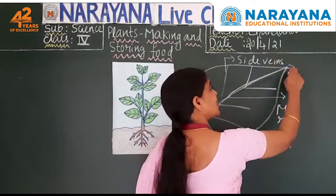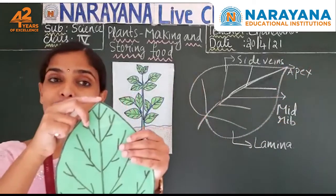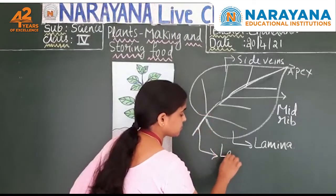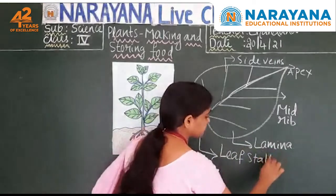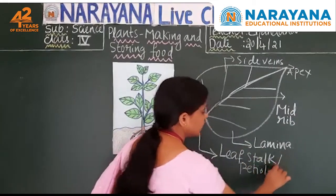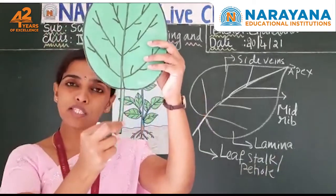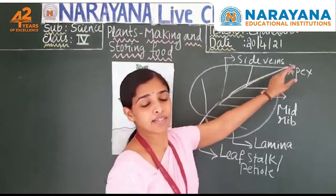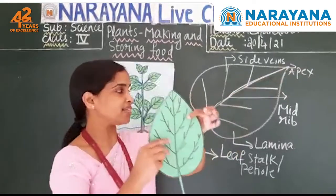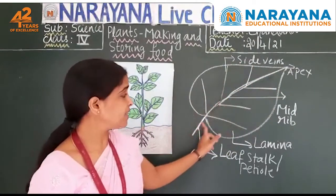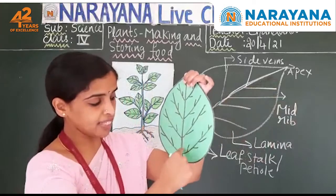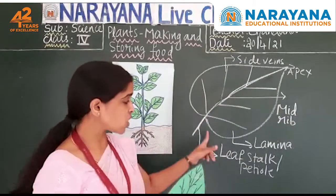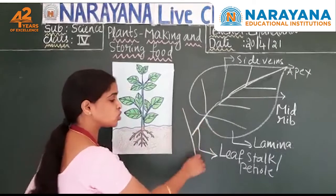The tip of the leaf is called the apex. And the stalk portion of the leaf is called the petiole, or leaf stalk. So: the tip of the leaf is the apex; the flat green portion is the lamina; the thick line at the center is the midrib; the thin lines on either side are the side veins; and the leaf stalk — by which the leaf is attached to a stem or branch — is the petiole.